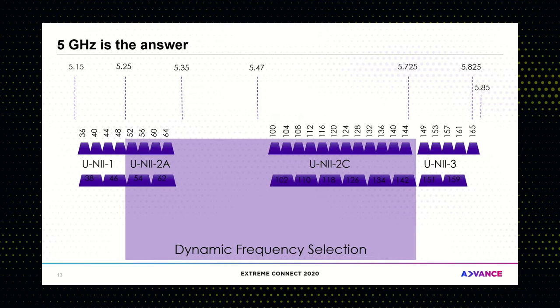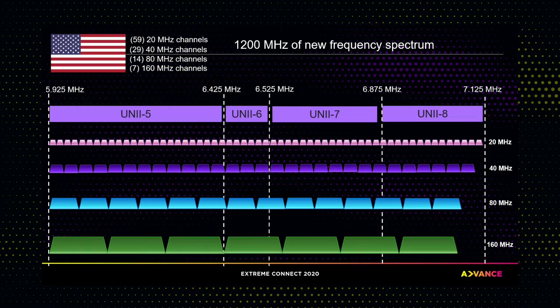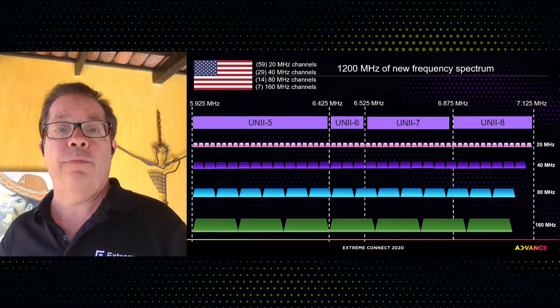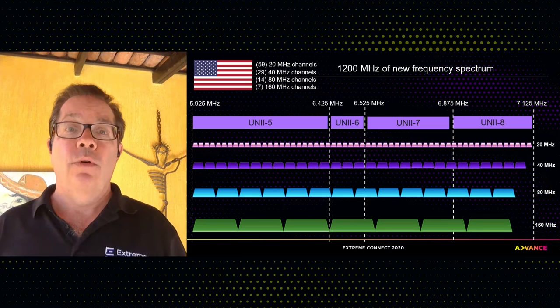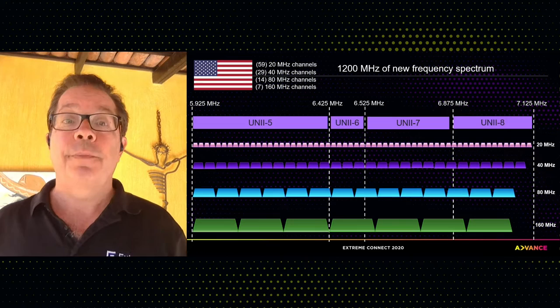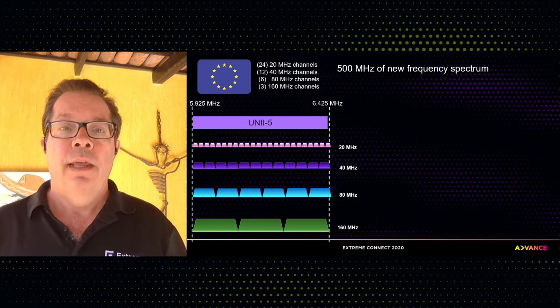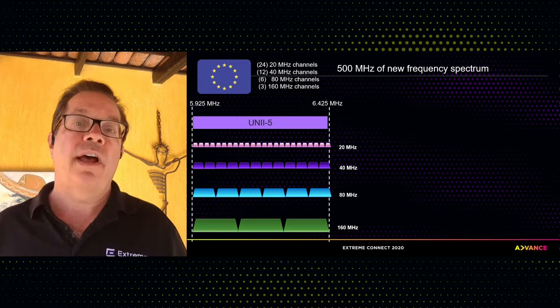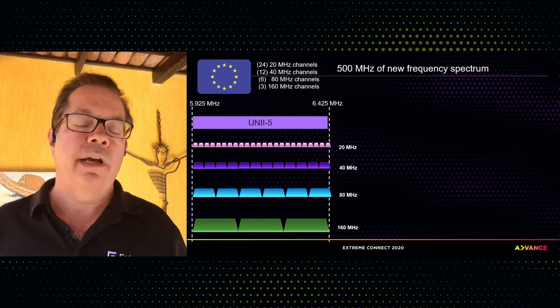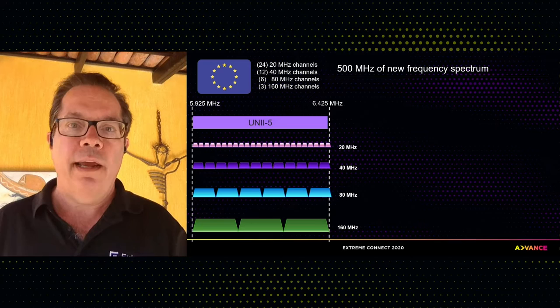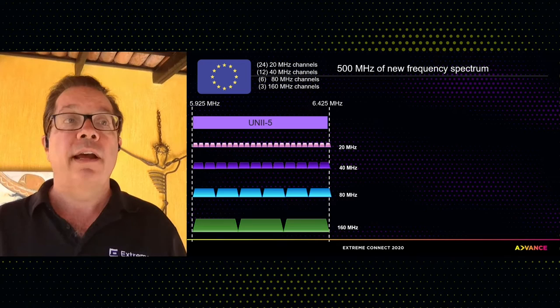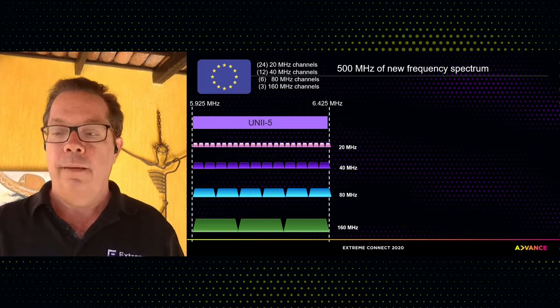Speaking of frequency space — 6 GHz is coming. The FCC has opened up 1,200 MHz of new frequency space. Look at all those channels coming in 2021 — a boatload of channels. Europe and other regions will follow. It's going to take a while before we see clients that can connect at 6 GHz, and your existing 5 GHz and 2.4 GHz clients will never be able to connect to that 6 GHz band. But having that new frequency space will make life easier — it'll be great for meshing initially and eventually another band of frequency space for all our clients.